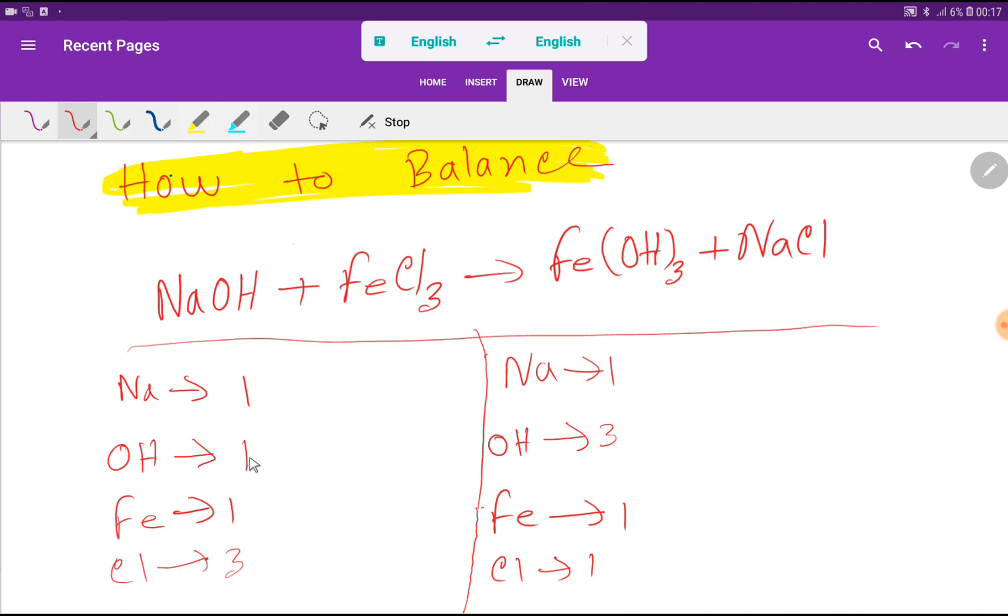Here we have 1 hydroxide but here we have 3. So to balance the hydroxide, we have to multiply by 3. That gives me 3.